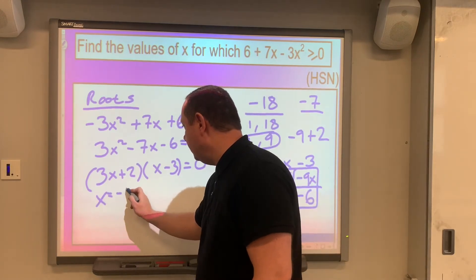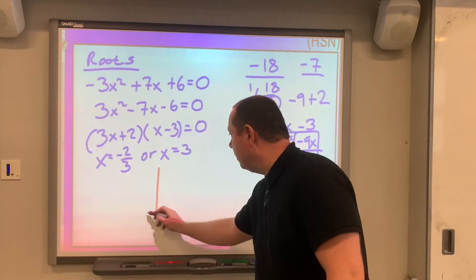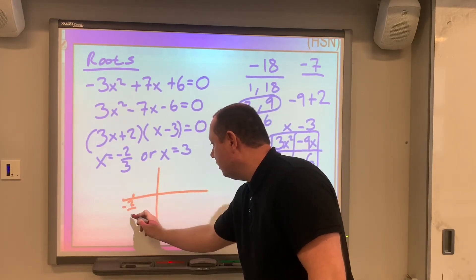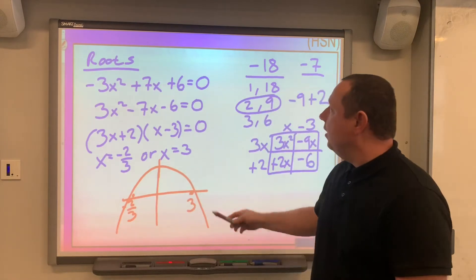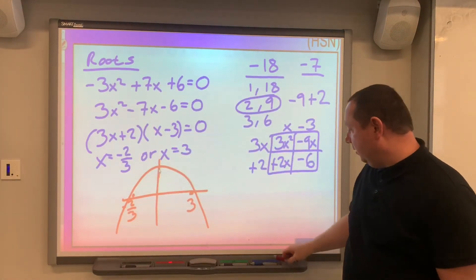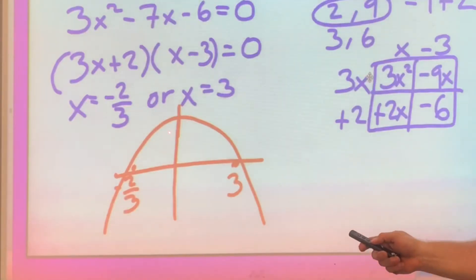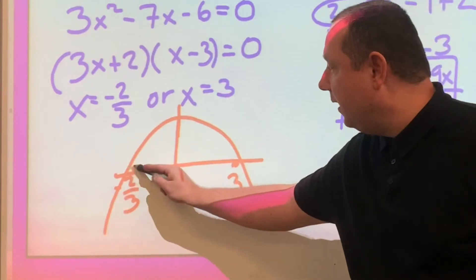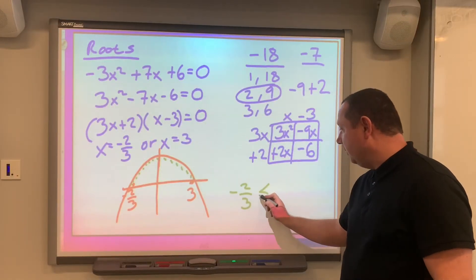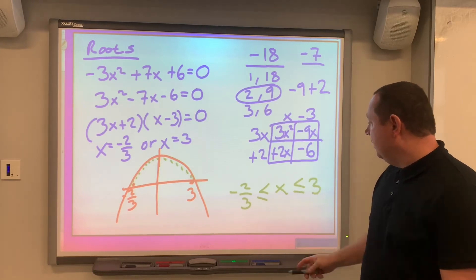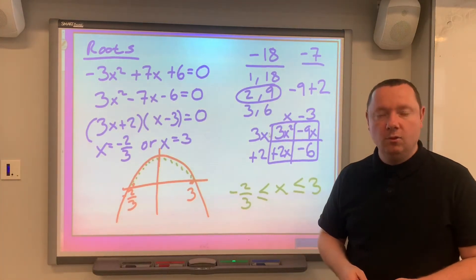So the roots are at x equals minus two thirds or x equals 3. Drawing a quick sketch with roots at minus two thirds and 3, I know the graph is upside down because it was a negative x squared. Going back to the original question asking when this is greater than or equal to zero — that's above the x-axis — the answer is minus two thirds is less than or equal to x is less than or equal to 3, with equals signs because the question used greater than or equal to.